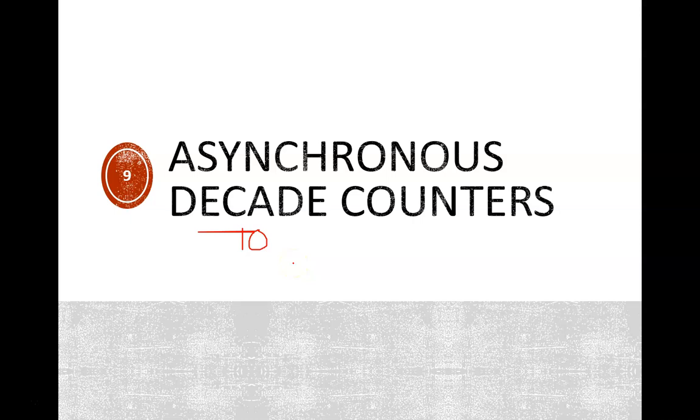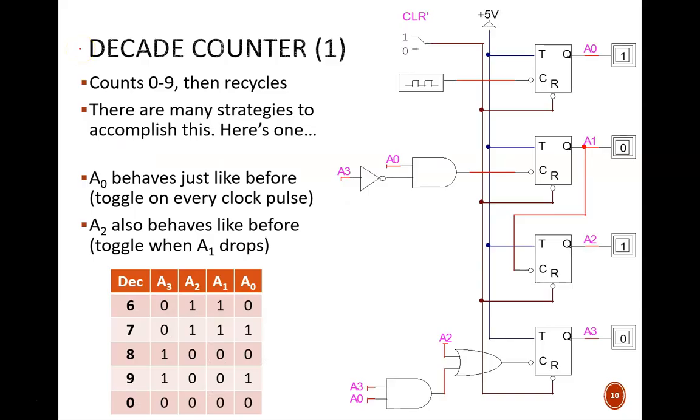In this video we will see how to accomplish that with a standard asynchronous decade counter design, and then see how multiple decade counters can be cascaded. The first thing to keep in mind about a decade counter is that it doesn't count to 10. It does count through 10 unique numbers, but the first number is 0. So it counts 0 through 9 and then recycles back to 0.